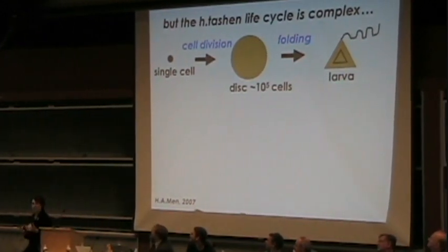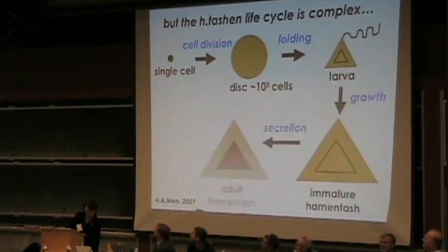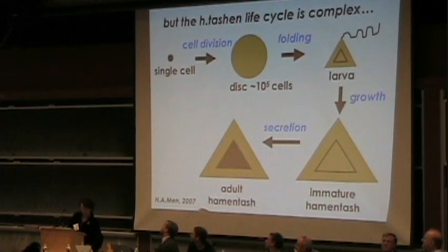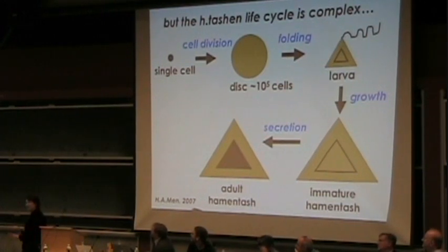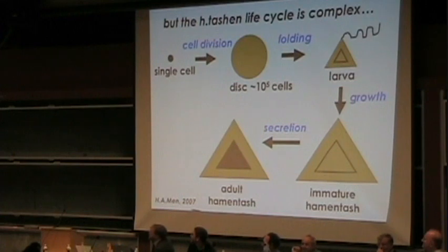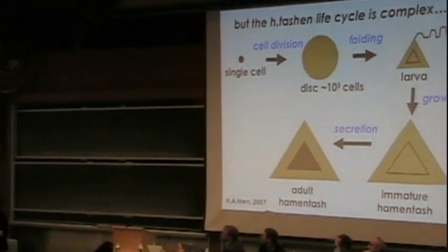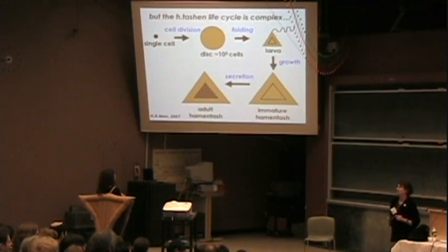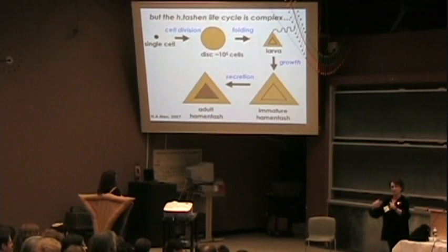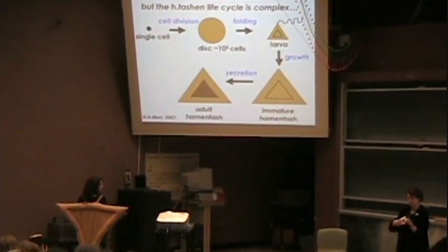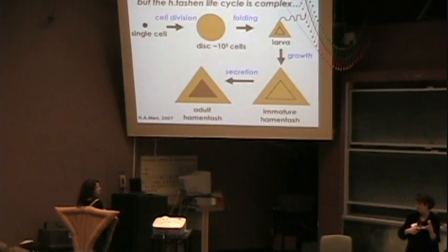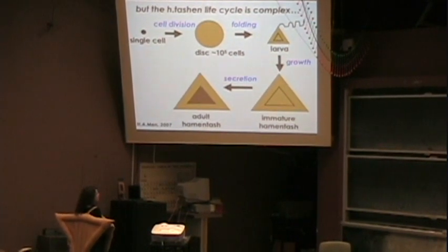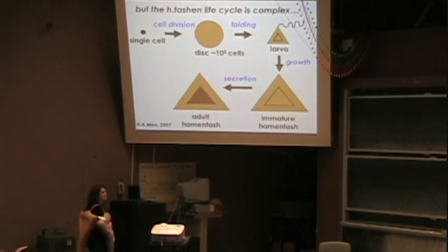This disc then folds into remarked formal cushions, which grows to form the immature Hamantash. And Lindsay — if you would turn around — Lindsay will exemplify the immature uncoded formal Hamantash, which through a complex secretory process fills, in a species-specific way, with poppy, prune, and so forth.